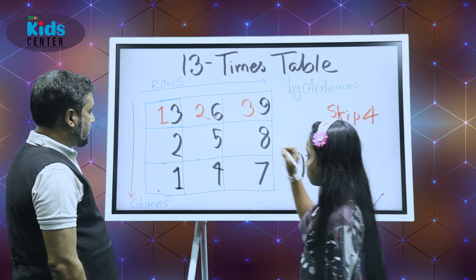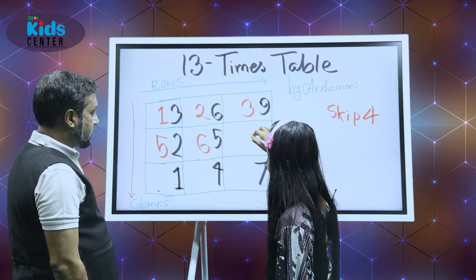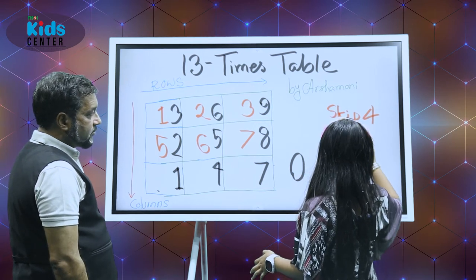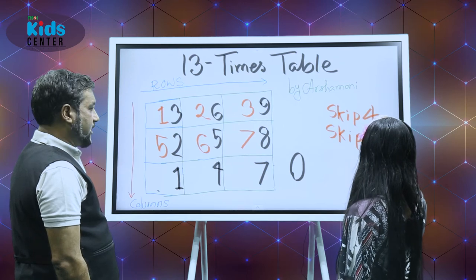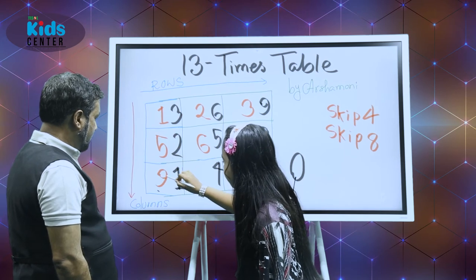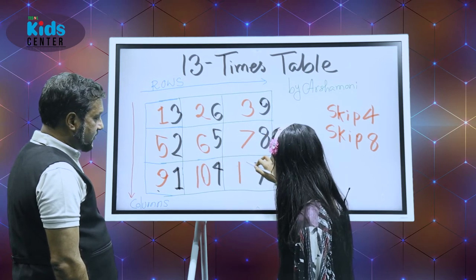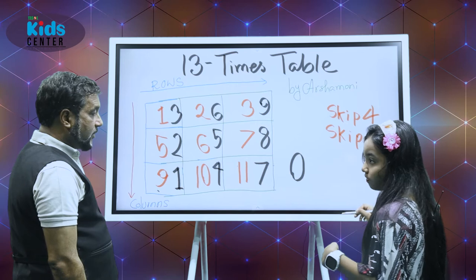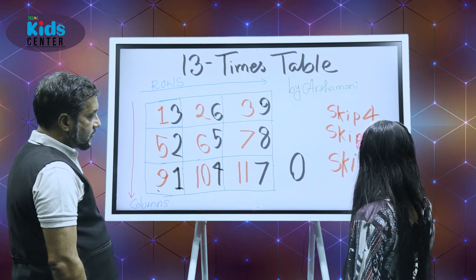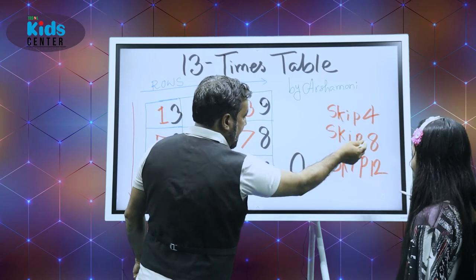We have to skip four. Now we're going to put five, six, then seven. And again, we have to skip eight. Now we have to put nine, ten, and eleven. And now we have to skip twelve. We skip twelve — the skip pattern is four, eight, twelve.